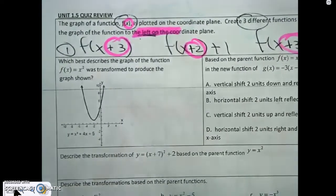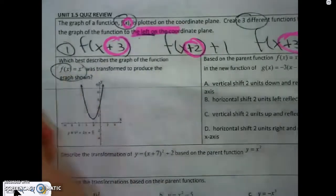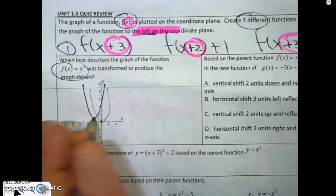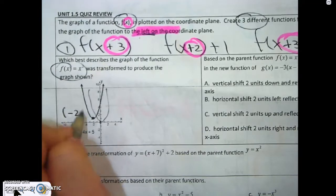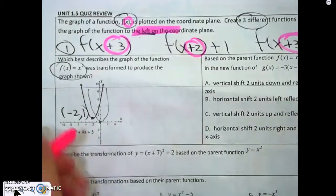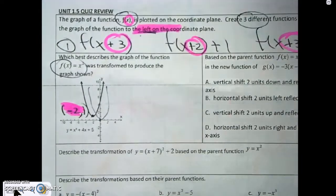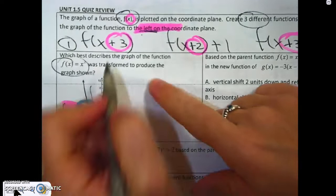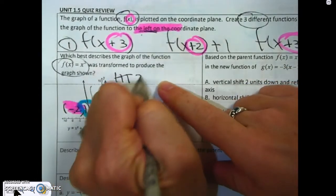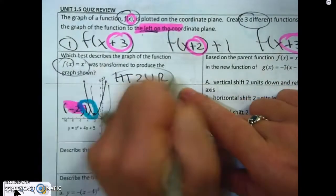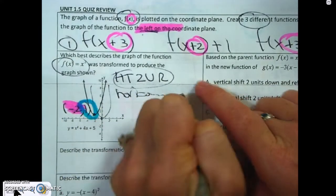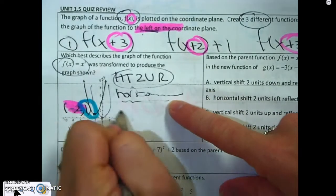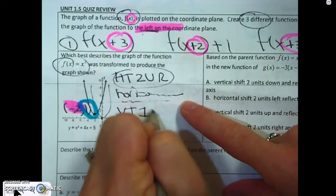Here's the parent function. The parent function goes through (0, 0) and makes a U shape. But looking at this graph now, the vertex is at negative 2, 1. So it's affecting the x by going left and the y by going up. Describing the transformation: horizontal translation two units right, and a vertical translation one unit up. Write it out fully or it's wrong.